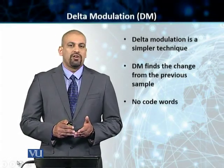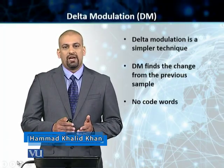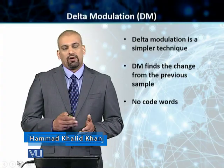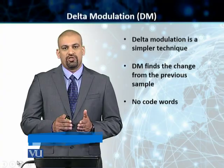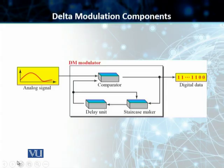We've been discussing delta modulation and looked at the basic concept of how the delta modulated stream of bits is produced. Now let's look at this slide covering the modulation process in DM. A delta modulator consists of three components: a comparator, a delay unit, and a staircase maker. The delay unit holds the signal until the comparator is ready, but the two basic components are the comparator and the staircase maker.